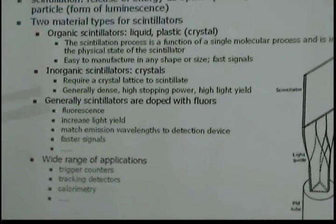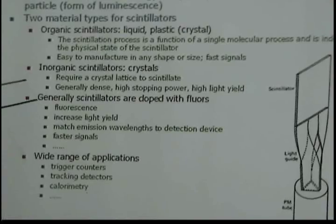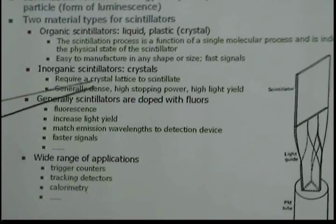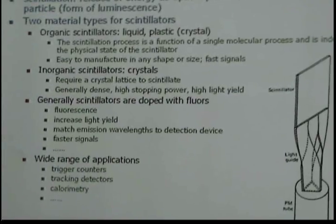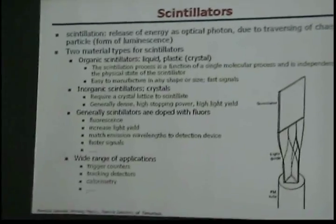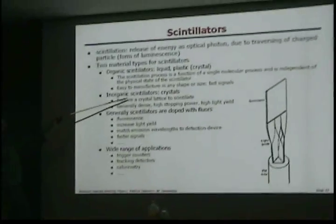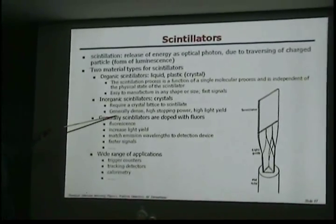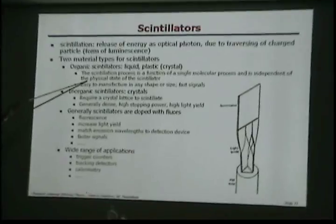And there are two types of material that we use for scintillators. There are organic scintillators, those are liquid or plastic, and then there are inorganic scintillators like crystals. Now, you know, if you go into the details of how it comes that this scintillates, goes a bit too far because with these crystals, we actually require the crystal lattice for it to scintillate.